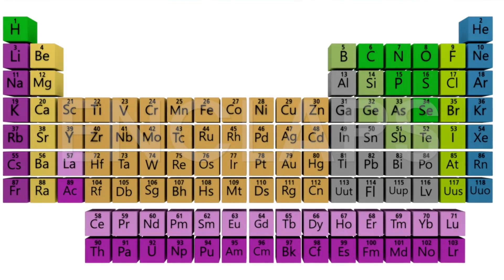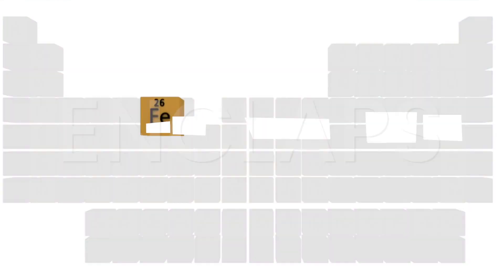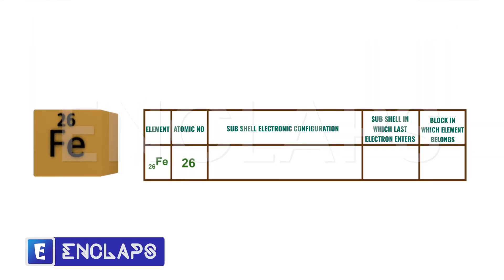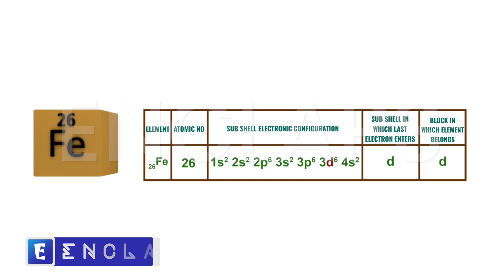Now consider the case of iron. Iron has its atomic number 26, so its electronic configuration can be written as 1s2, 2s2, 2p6, 3s2, 3p6, 4s2, 3d6. Here the last electron enters the D subshell. That means iron belongs to D block in the periodic table.